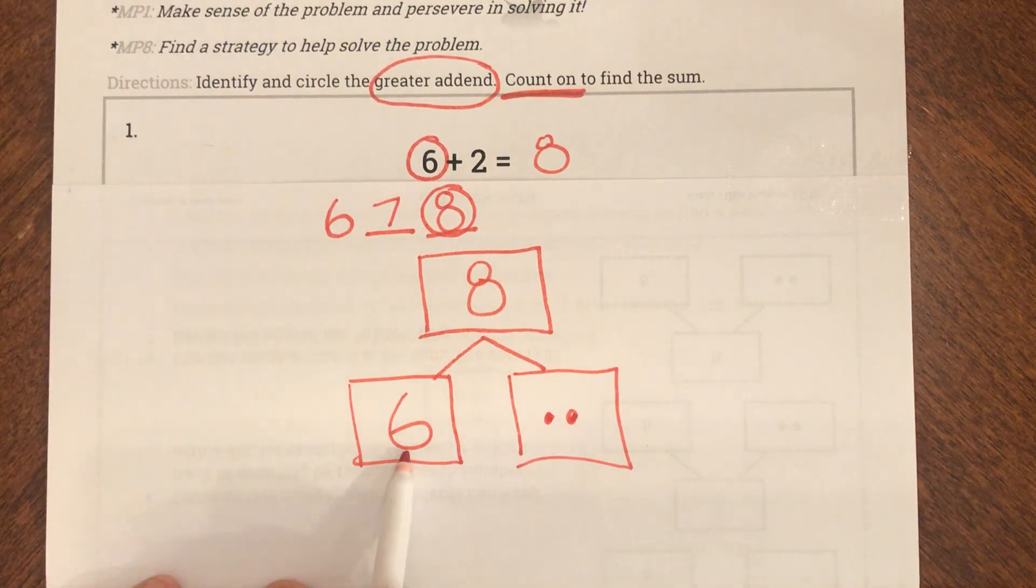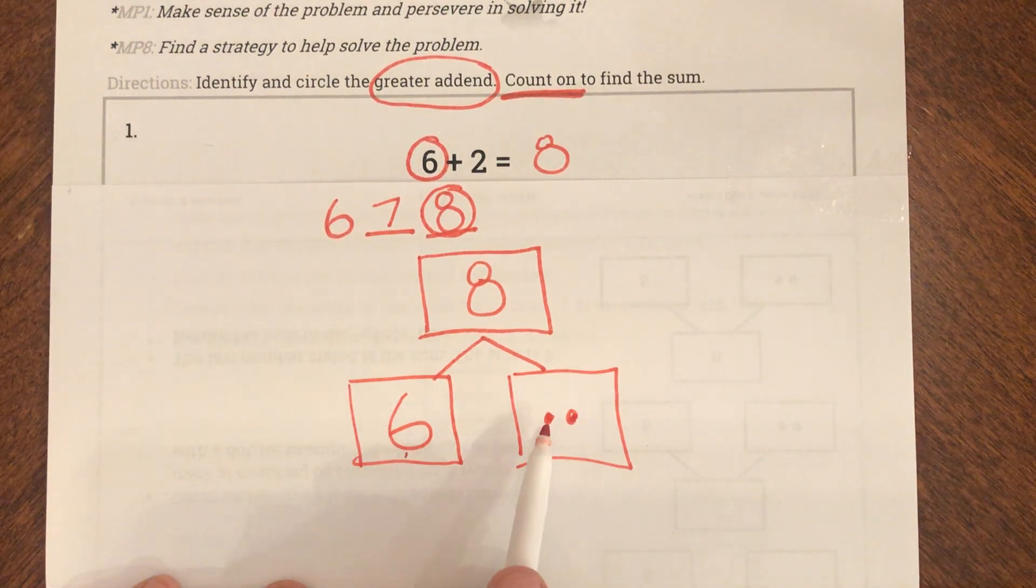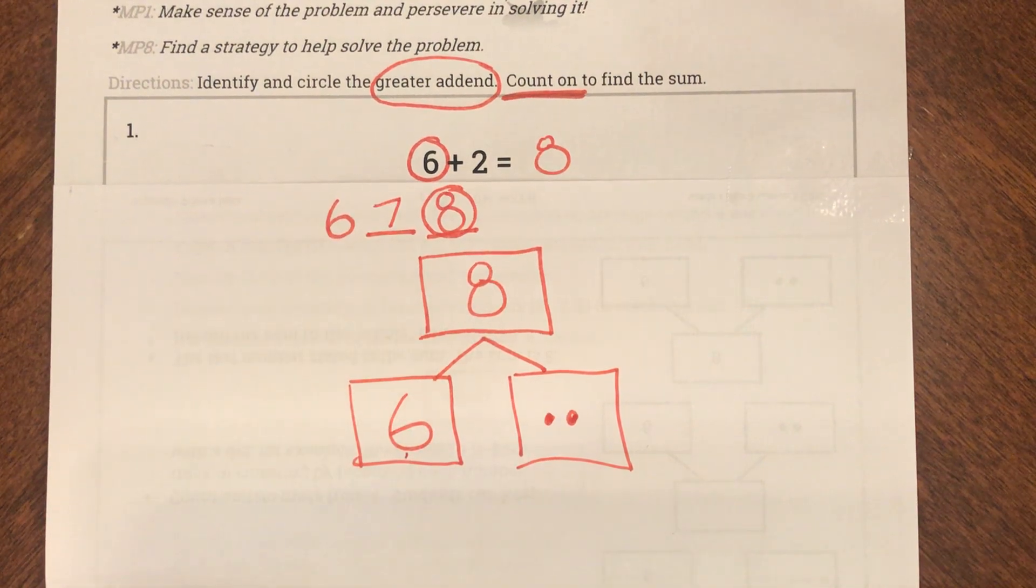8 is my answer. So I started with 6 and then I counted on 2 more. So 6, 7, 8. And that's my whole or my sum.